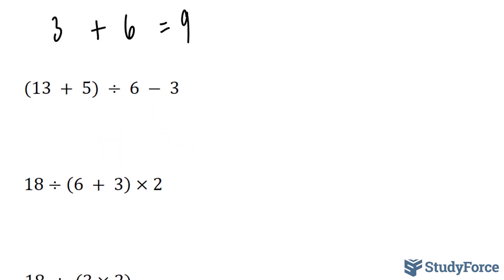In our next example, we have (13+5)÷6-3. 13 plus 5 is in brackets, so that gets performed first. 13 plus 5 is 18, then divided by 6, which is 3, then we subtract 3, and we end up with 0.